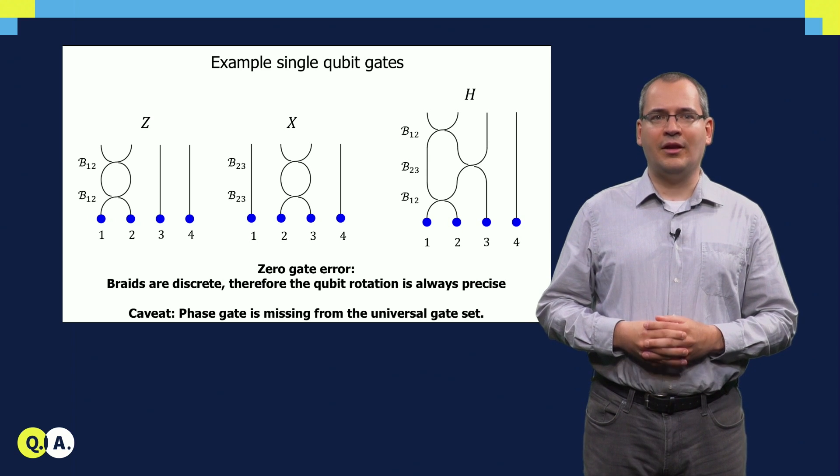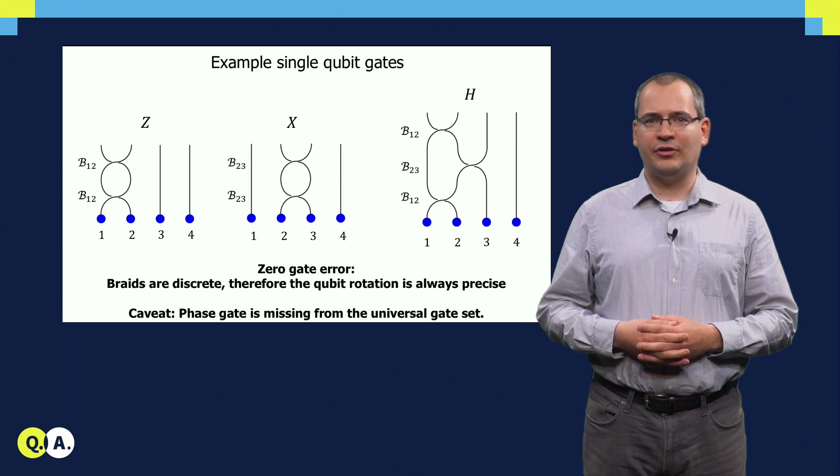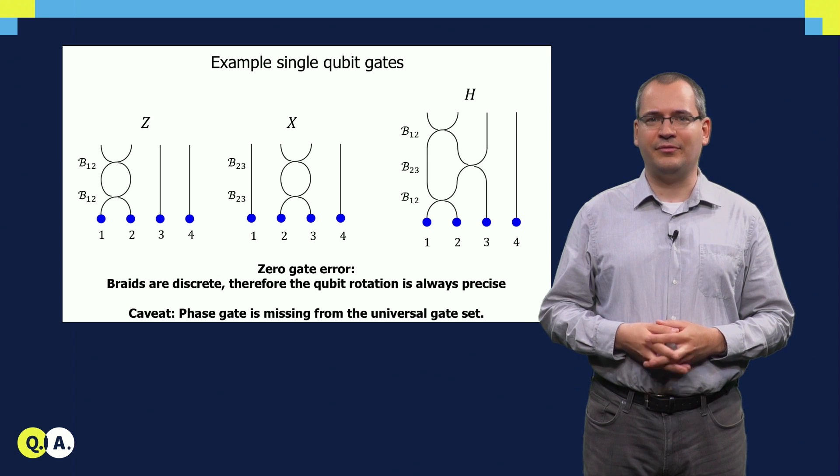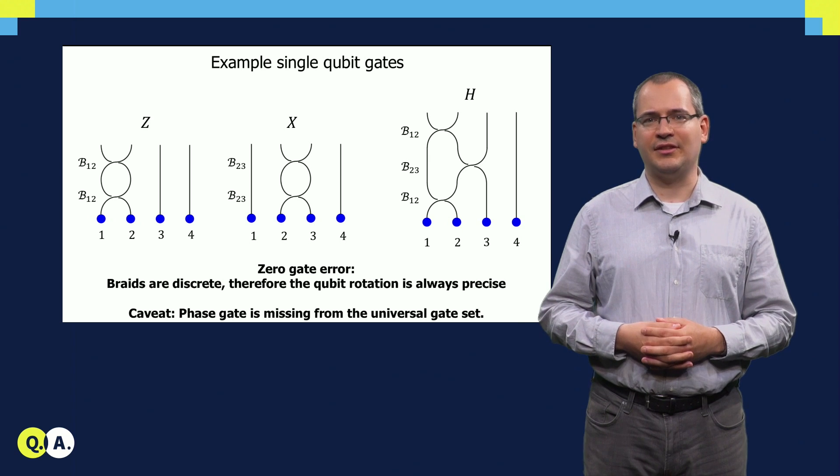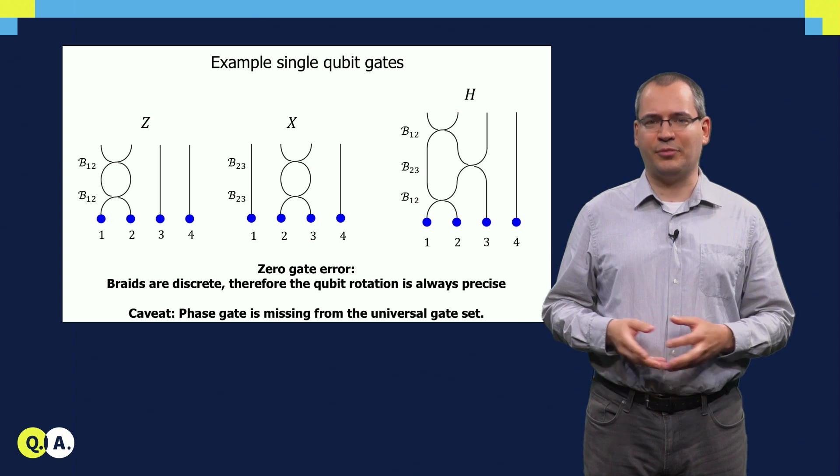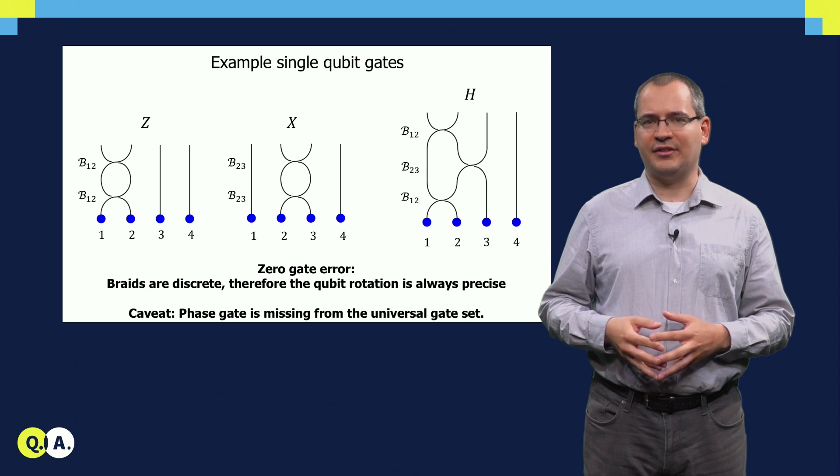There is, however, a catch. With discrete braiding operations, we cannot reach the entire Bloch sphere of a qubit, so some quantum gates required for universal quantum computation will be missing from the set that we can do with braiding. These additional gates can be supplemented by topologically not protected operations on the qubit, but with a less than 100% gate fidelity.